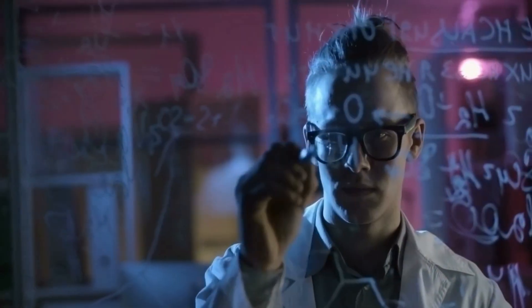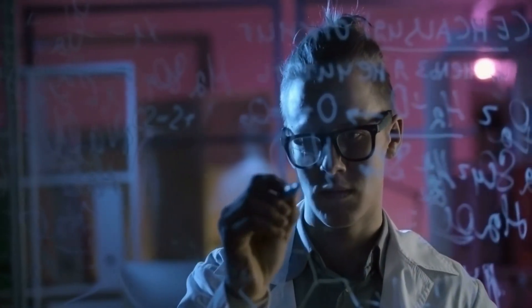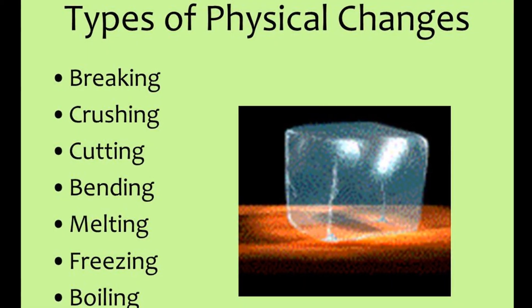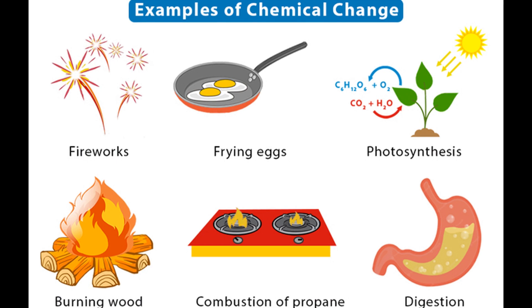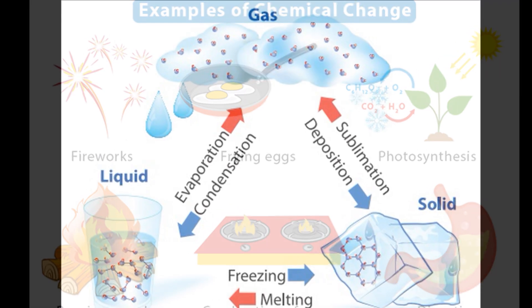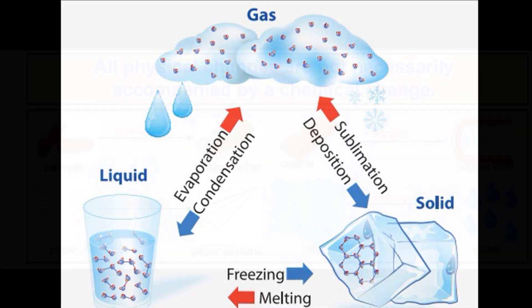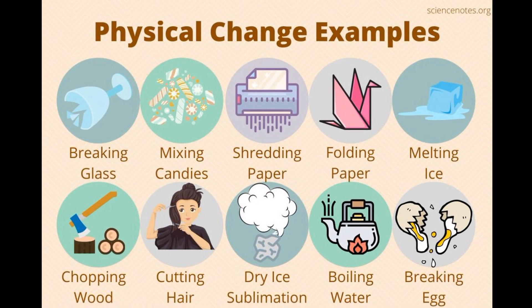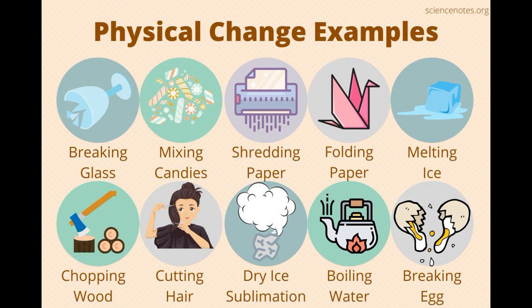In science, all possible changes can be classified into two broad categories: first, physical changes, and second, chemical changes. A physical change is one in which a substance alters temporarily in some or all of its physical properties — i.e., state, shape, size, appearance, etc. — but not in its chemical composition.